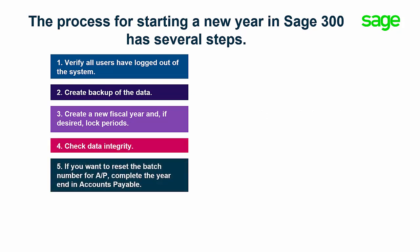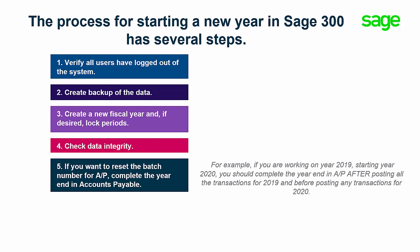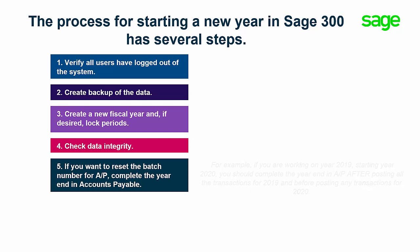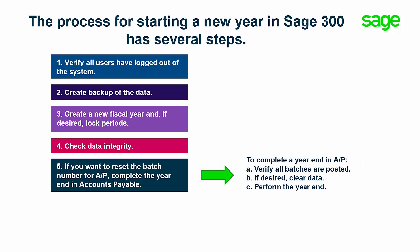If you want to reset the batch numbers for Accounts Payable, you need to complete a year-end in AP after posting all the transactions to the current year and before starting to post transactions for the new year. For example, if you are working on year 2019 and starting year 2020, you should complete the year-end in AP after posting all transactions for 2019 and before posting any transactions for 2020. To complete a year-end in Accounts Payable, verify all batches are posted and, if desired, clear data, and finally perform the year-end.